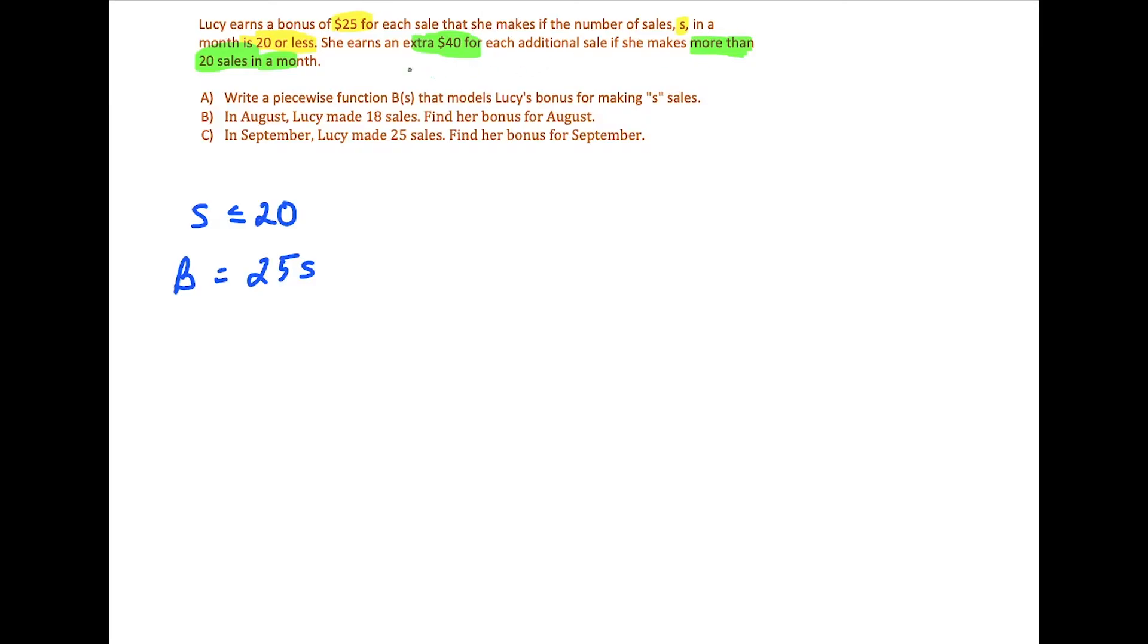So this part here isn't too bad, but where things get a little bit tricky is when we consider the next part, what happens when she makes more than 20 sales in a month. So for the S greater than 20 scenario, well, there's a few things that we have to consider that the 21st sale, she makes $40 per sale for every sale more than 20, but we still have to account for the first 20 sales. So for the first 20 sales, Lucy makes B equals 25 times 20. So we're essentially just using our first equation here. And that tells us when we multiply this out, that Lucy makes $500 in bonuses if she sells 20 items.